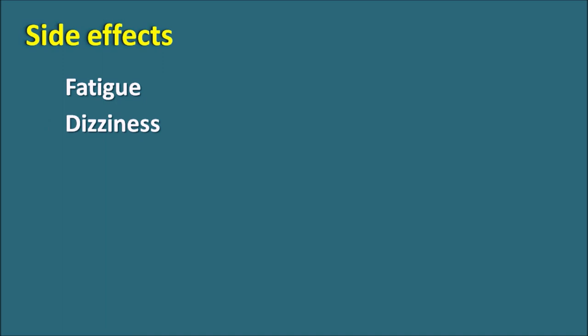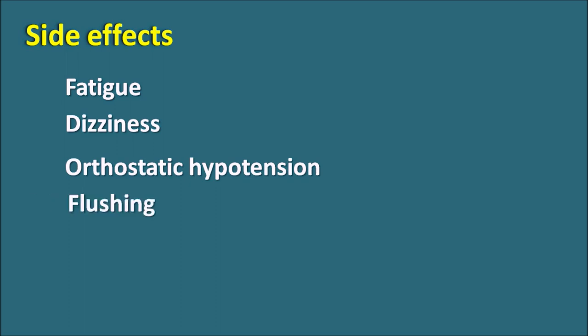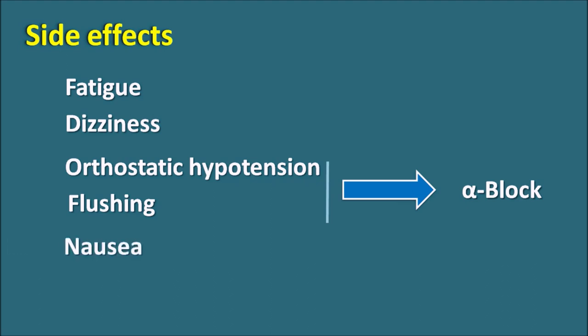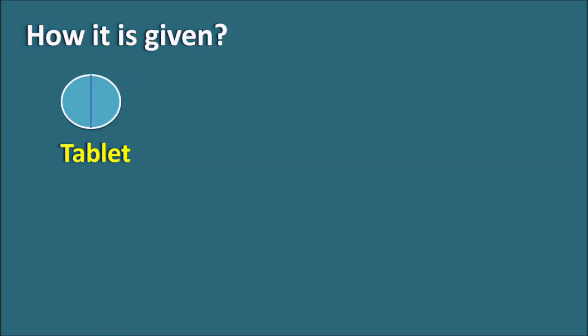The side effects of Labetalol are mainly due to alpha blockade as well as beta blockade. It can produce fatigue and dizziness — similar to other beta blockers. It can also produce orthostatic hypotension and flushing, which are mainly due to alpha blockade. Additional side effects include nausea and drowsiness.